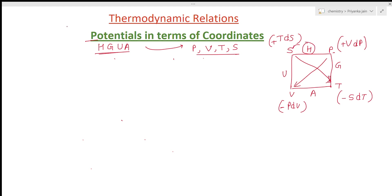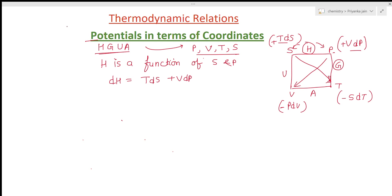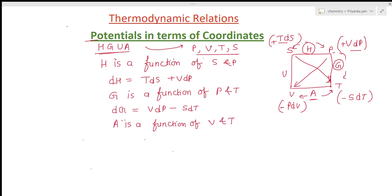See here: h is a function of s and p, so we can write dh equals tds plus vdp. Similarly, g is a function of p and t, so dg equals vdp minus sdt. Similarly, a is a function of t and v, so da equals minus pdv minus sdt. This is the first, second, and third equation.